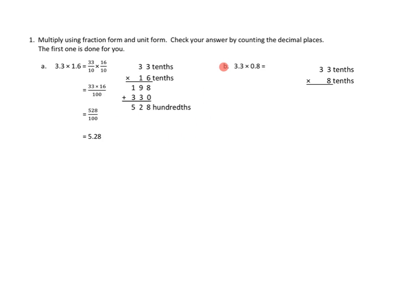Now, here's what they did on this side. They said, when we've got a unit form going in the fraction, let's go ahead and express that in our standard algorithm of multiplication. So rather than 33 tenths expressed as a fraction, let's do that in unit form — 33 tenths times 16 tenths. What we're going to do is multiply the numbers part and also multiply the units part. Tenths times tenths: 1 tenth times 1 tenth is hundredths. So the unit form becomes hundredths. Then they step through the standard algorithm of multiplication.